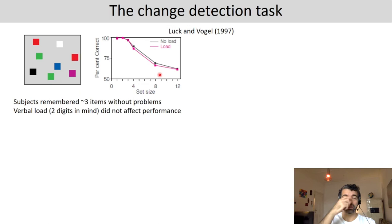What does this indicate? It indicates that there is a limited working memory capacity, as stated by Baddeley and Hitch. This working memory capacity seems to be on average around three to four items, because that's when the drop in performance starts.